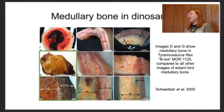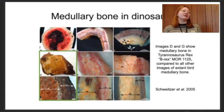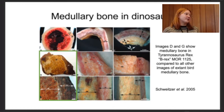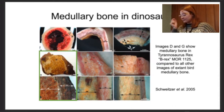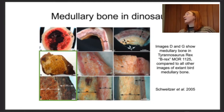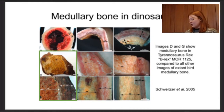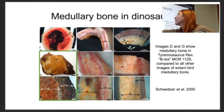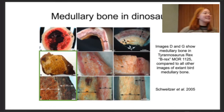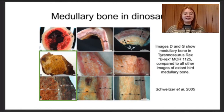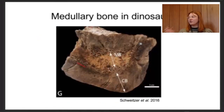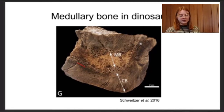Schweitzer et al. 2005 — Mary Schweitzer does really cool work looking at possible DNA detection in dinosaur bones and examining white blood cells within T. rex bones. Images D and G outlined by the green box show medullary bone in Tyrannosaurus rex specimen MOR 1125, also known as B-rex. The other images show medullary bone in emus, hens, and ostriches for comparison — a very distinctive layer within the compact bone. This tells you the specimen is female, though it has to have died when it was about to lay eggs.